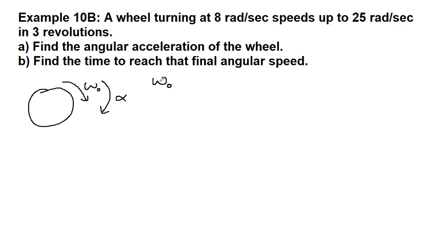All right, so let's start to label the information that we're given. The initial omega, the initial angular velocity, is 8 radians per second. It is already in the appropriate unit, so we don't have to convert anything. And it speeds up to 25 radians per second. That's the final angular velocity.